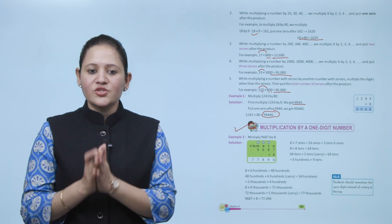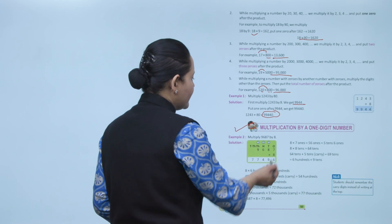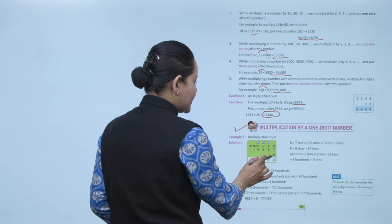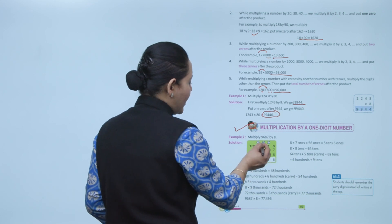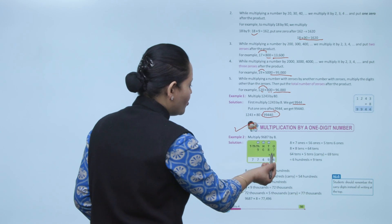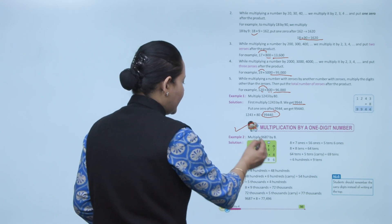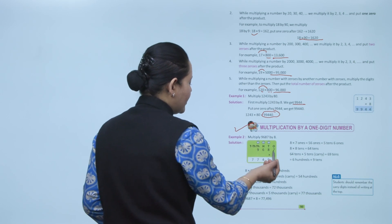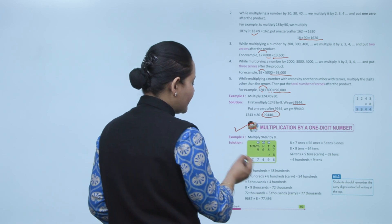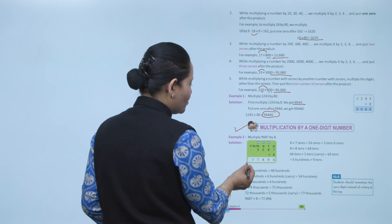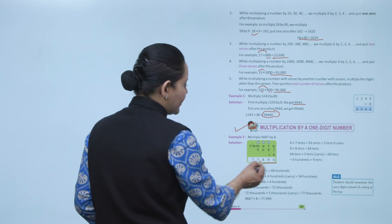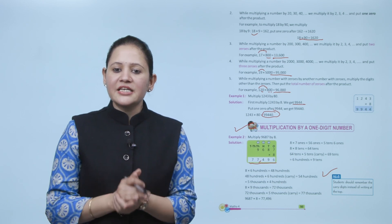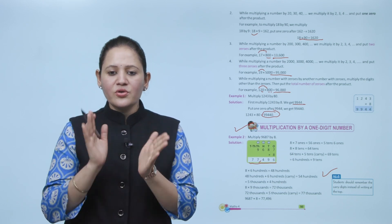Next, multiplication by a one-digit number. Multiply 9687 by 8. First, 8 into 7 is 56 — write 6 and carry 5. Then 8 into 8 is 64 plus 5 is 69 — write 9 and carry 6. Then 8 into 6 is 48 plus 6 is 54 — write 4 and carry 5. Then 8 into 9 is 72 plus 5 is 77 — write 7 and carry 7. The answer is 77,496. Students should remember the carry digit instead of writing it on top.